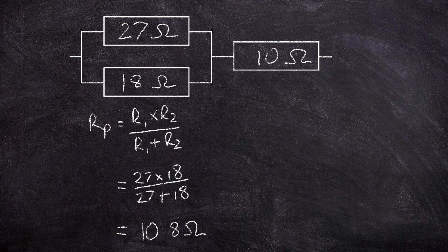So what we're sort of thinking about here is that we can kind of replace this part of the circuit with just one resistor that has a value of 10.8 ohms. So if you imagine this being replaced with a 10.8 ohm resistor, we can see that we've now got a 10.8 ohm resistor in series with a 10 ohm resistor.